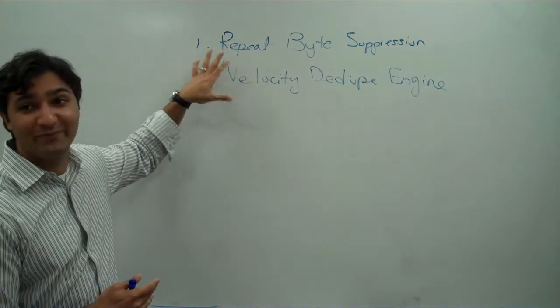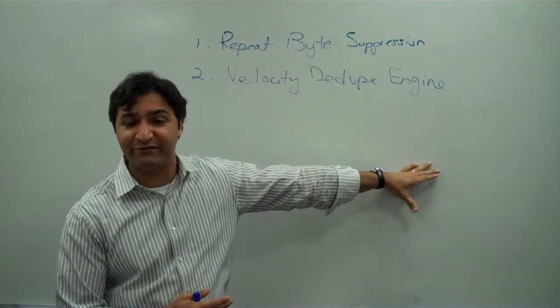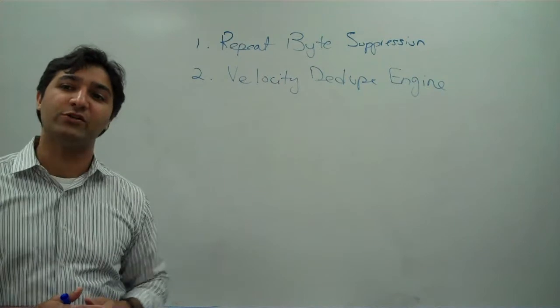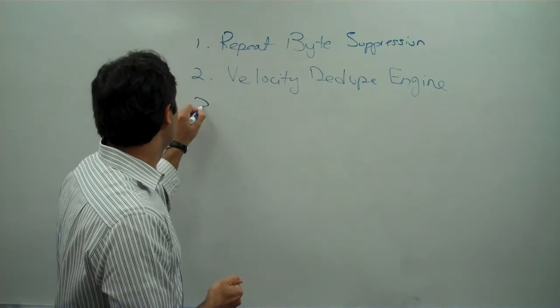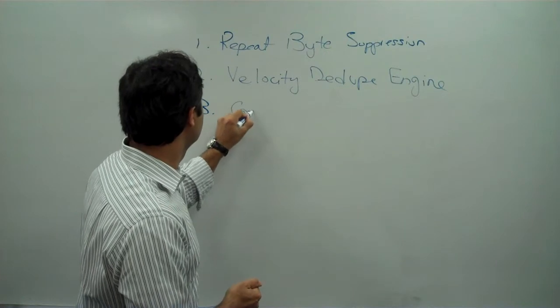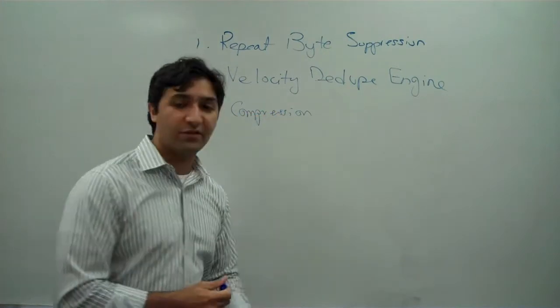So that's number two. So we talked about repeat byte suppression. I talked about the velocity dedupe engine, which is again our core IP here at Infinita. And there's a third thing we do, which is compression. We do gzip.